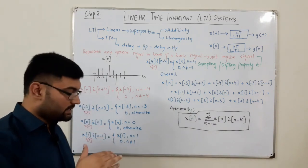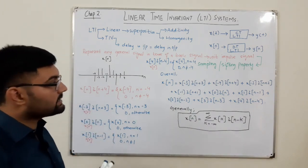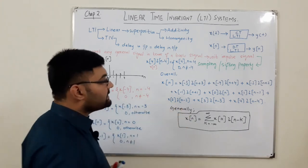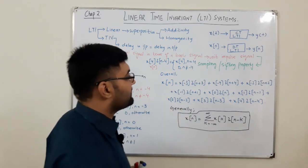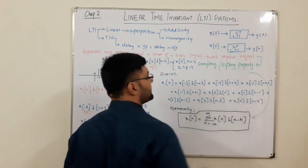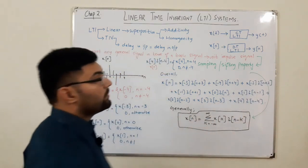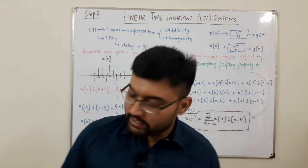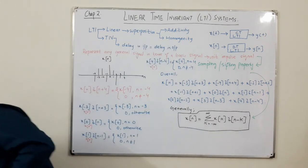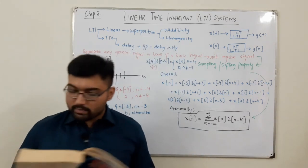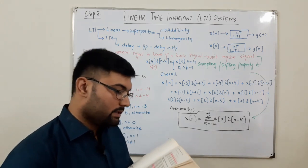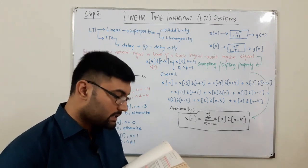To find the output, we need one more parameter — the impulse response — which will be studied in the next video. This representation is the shifting property of the discrete-time unit impulse signal, which was already covered in the continuous-time domain.